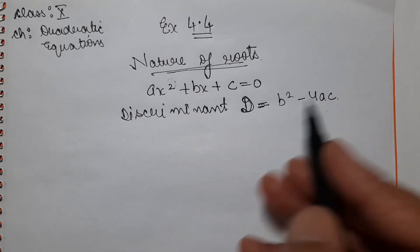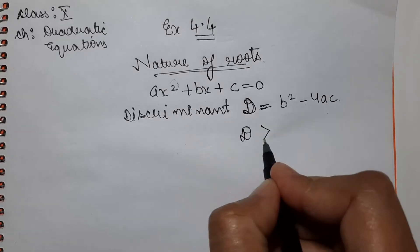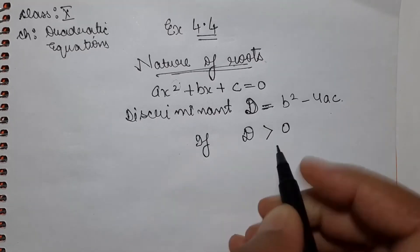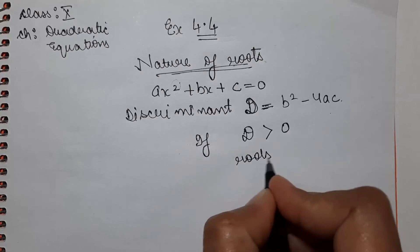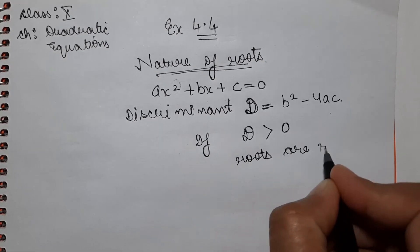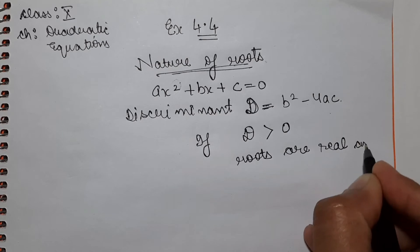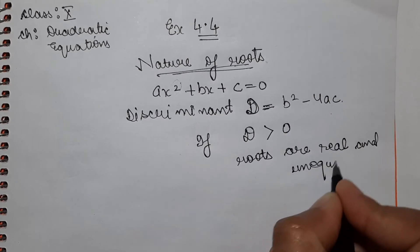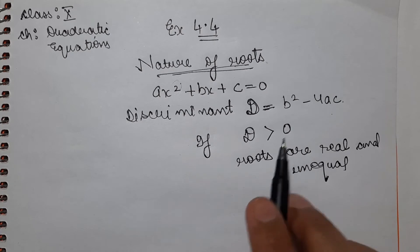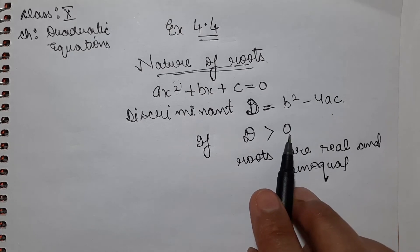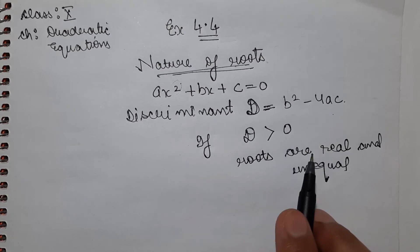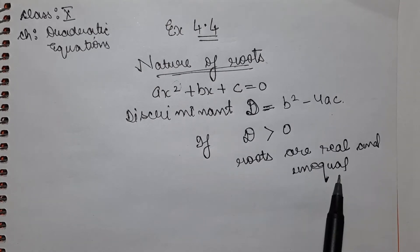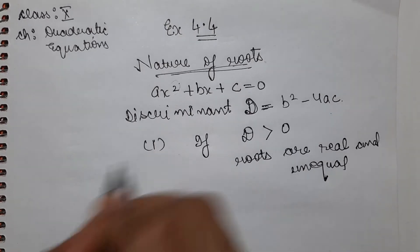If our discriminant is greater than 0, meaning some positive number will come — for example 1, 4, 20, 40, 30, whatever — then the roots are real and unequal. This is the first situation.